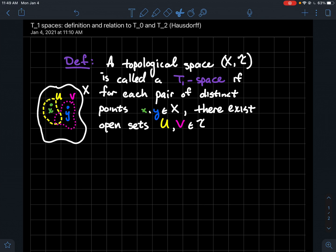So what do I want you to notice from this picture here? Well, U is a neighborhood of x, V is a neighborhood of y, but notice that y is not in U and notice that x is not in V. So if we write that down, x should have a neighborhood that misses y and y should have a neighborhood that misses x.